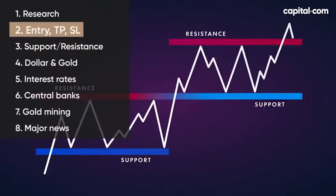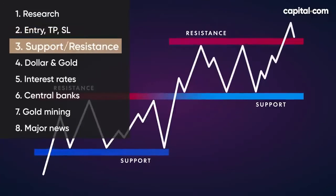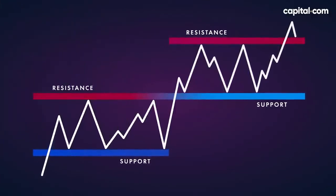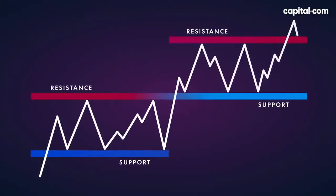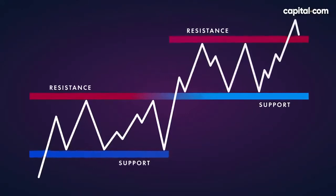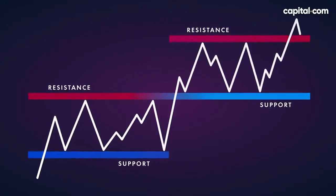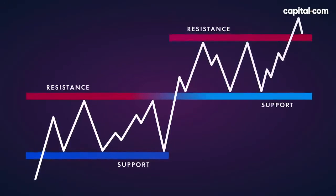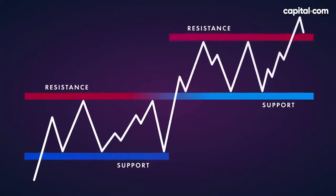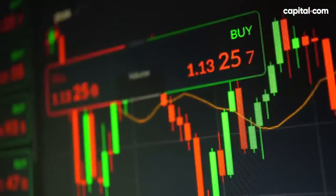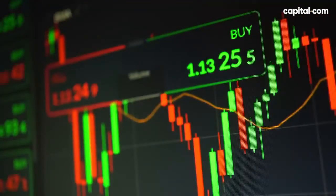To help you determine these three levels, you can identify the nearest support and resistance levels. You can either look at historical lows and highs that were previously tested, or you can use various trading indicators such as Fibonacci retracements or moving averages. These three components are part of technical analysis, something we often use on this YouTube channel to understand charts.